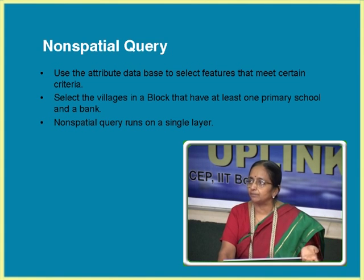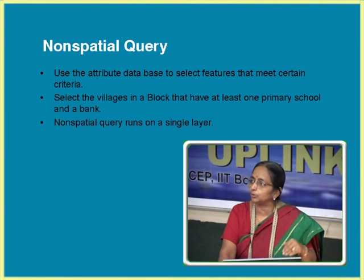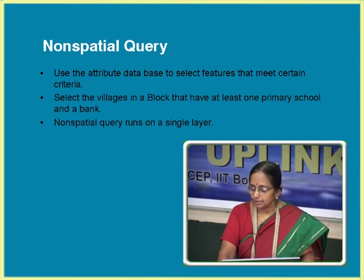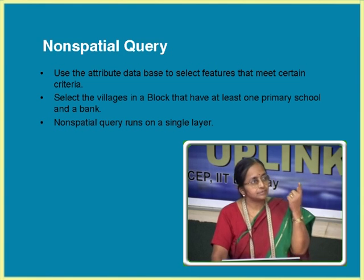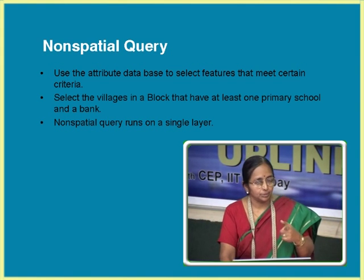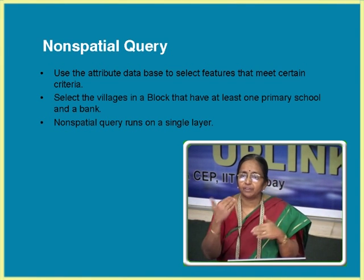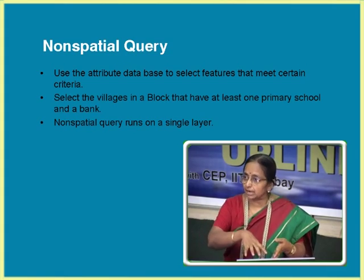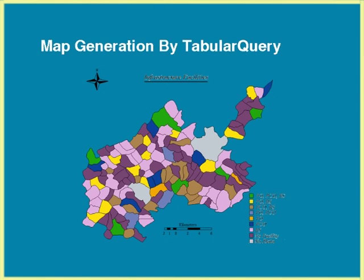For example, show me the villages which have no school, or show me the villages which have school-going children more than 500 and no school. If your tables are properly organized for the features, non-spatial query runs in an easy way. Non-spatial query means a single layer with attributes. When you have a very powerful analysis in vector, it will run spatial objects with non-spatial query. Here I am showing just the non-spatial query on a single layer.